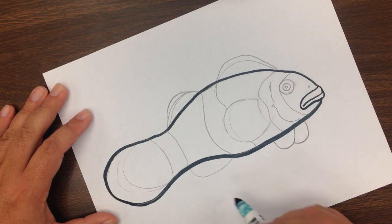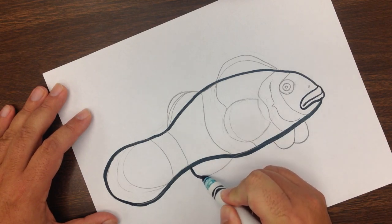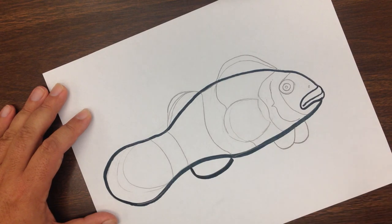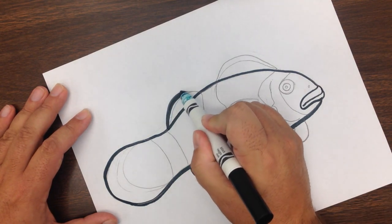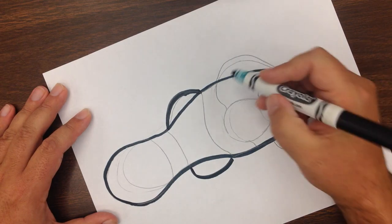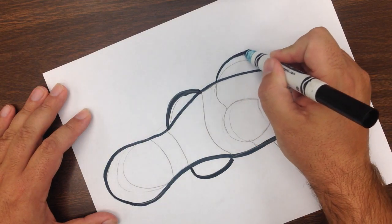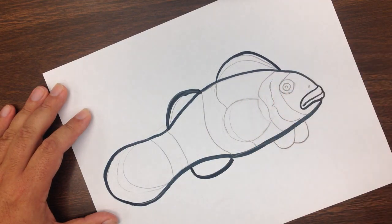Next, I'm going to go to the fins. Remember these fins have rounded edges, right? So we have one under the tail and then one just above it. The dorsal fin on the back here.